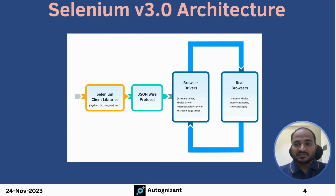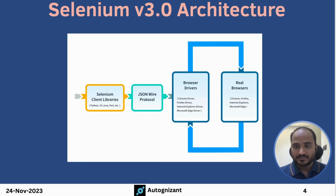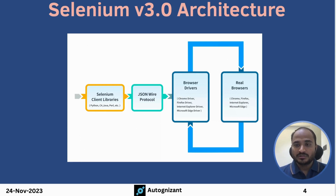These JAR files communicate with the browser drivers — there is a ChromeDriver for Chrome, a Firefox driver for Firefox, and an Internet Explorer driver for Internet Explorer, and similarly for Microsoft Edge. These browser executables are developed by the browser developers themselves. Google Chrome developers developed the browser executable for Chrome; similarly Microsoft for Internet Explorer and Edge, and Mozilla for Firefox.